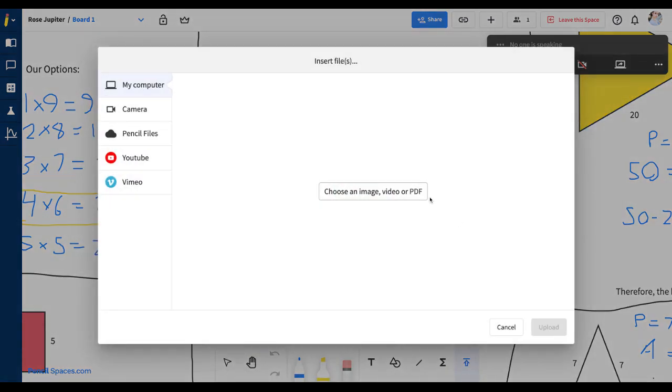Then you can choose an image, video, or PDF from your computer by clicking this button here. Once you've uploaded a file, you can see the name of the file right below. Then you can click Upload.